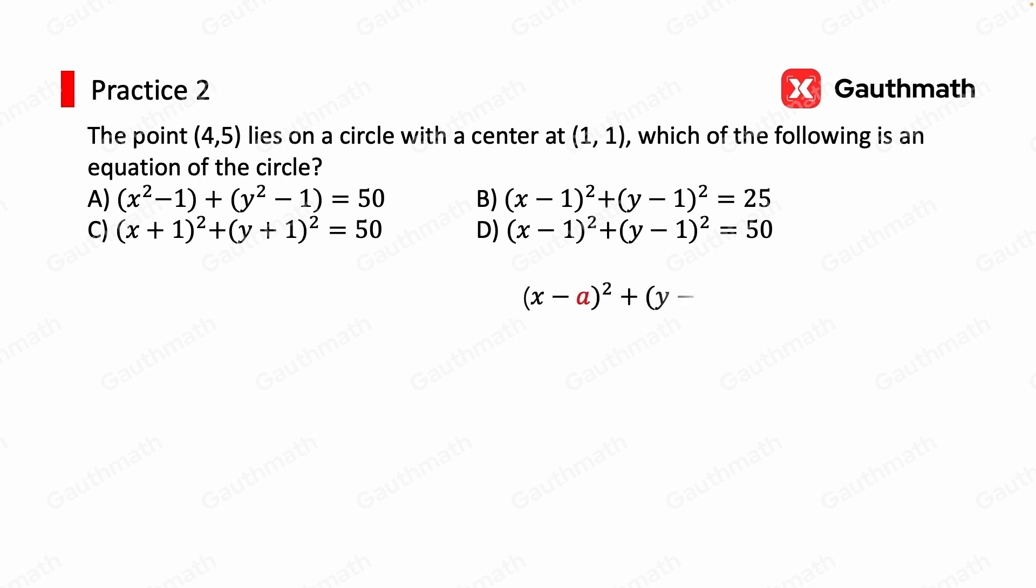Let's bring out the equation first. x minus A squared plus y minus B squared equals R squared. Let's fill in A and B for 1, 1. And we're missing the radius. Let's just make a sketch of this circle and see what happens.